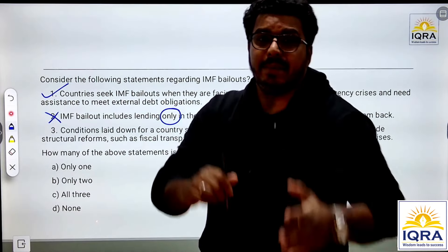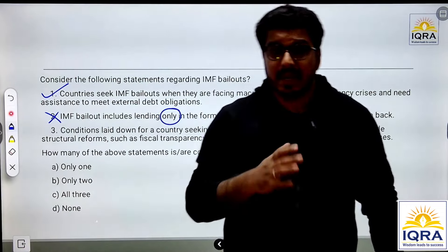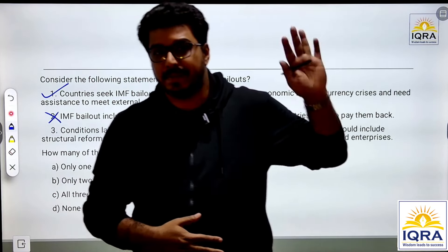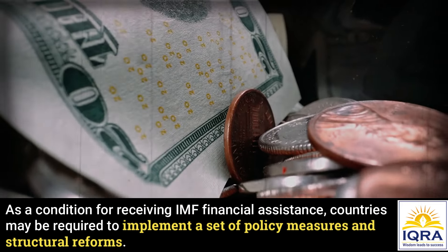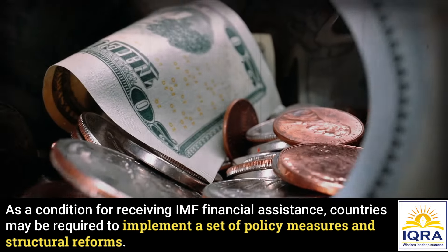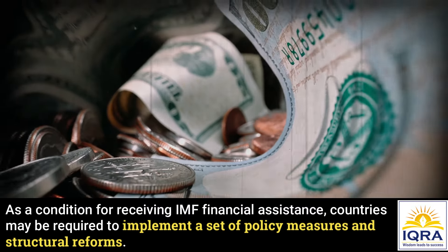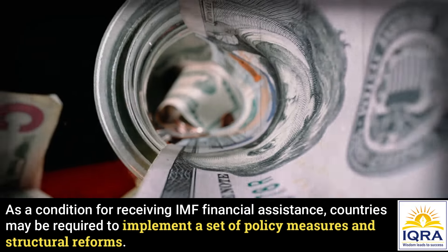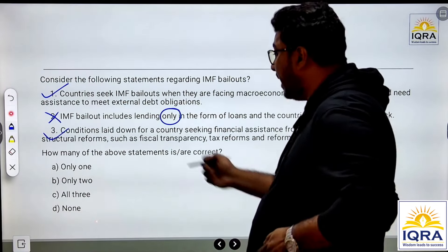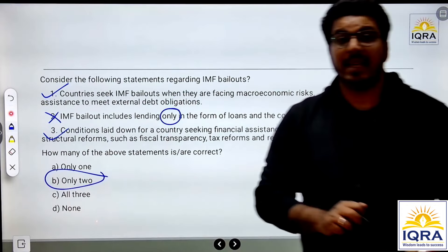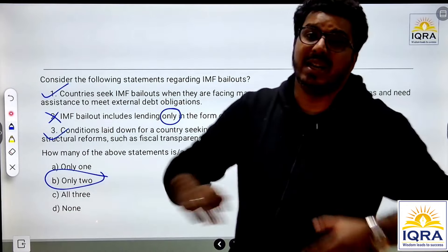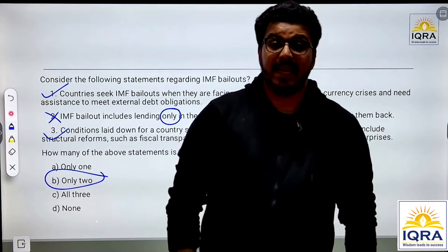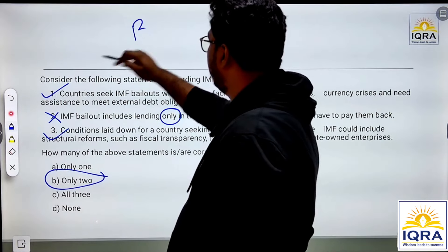The conditions laid down for countries seeking financial assistance from the IMF include structural reforms. When a country receives an IMF bailout package, there will be mandatory changes in the form of structural reforms before the loan is given. This statement is correct. So two statements are correct, and the correct answer to this question is B.